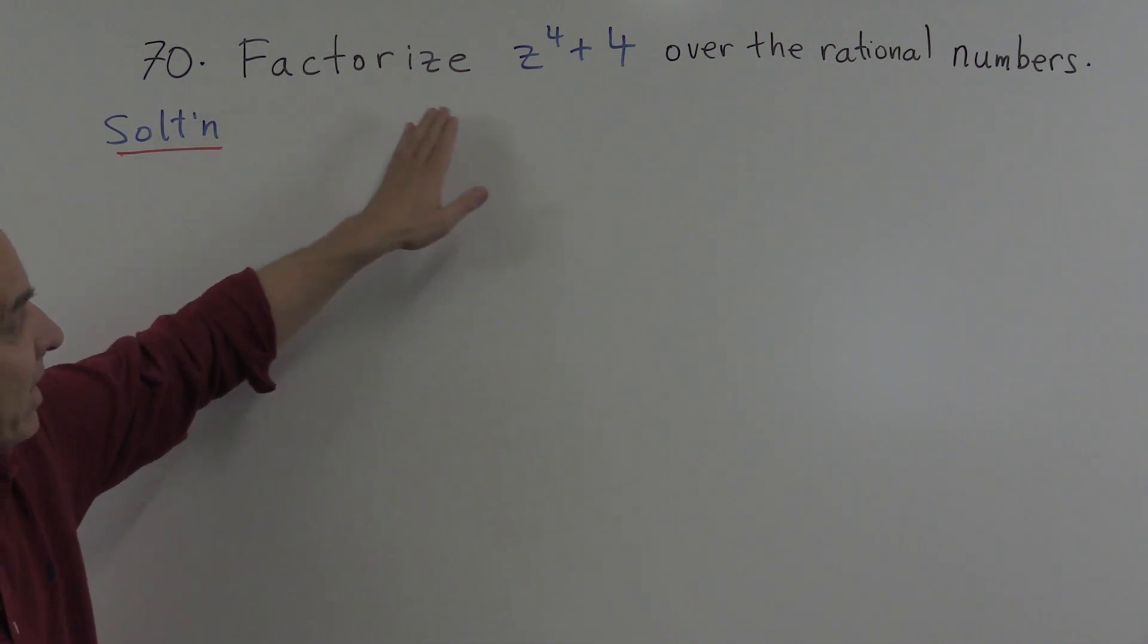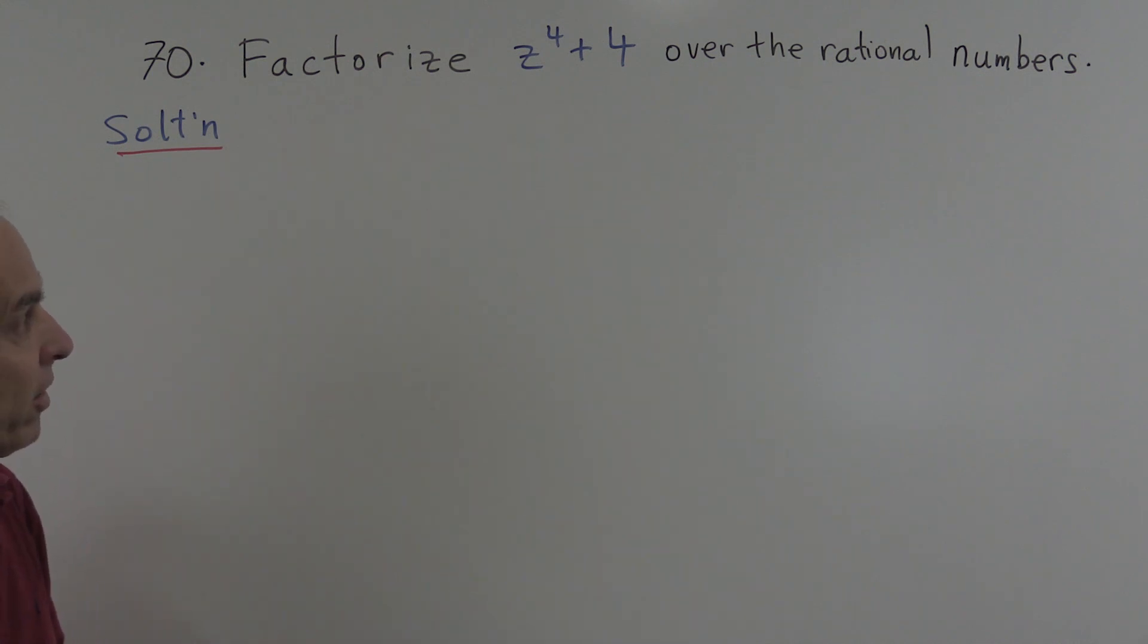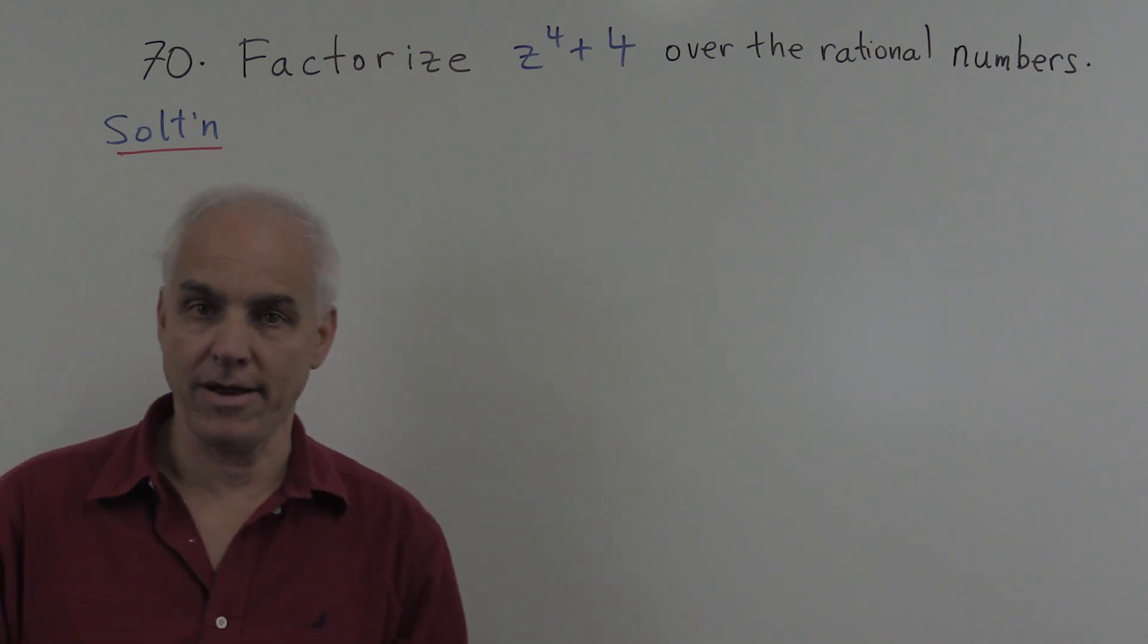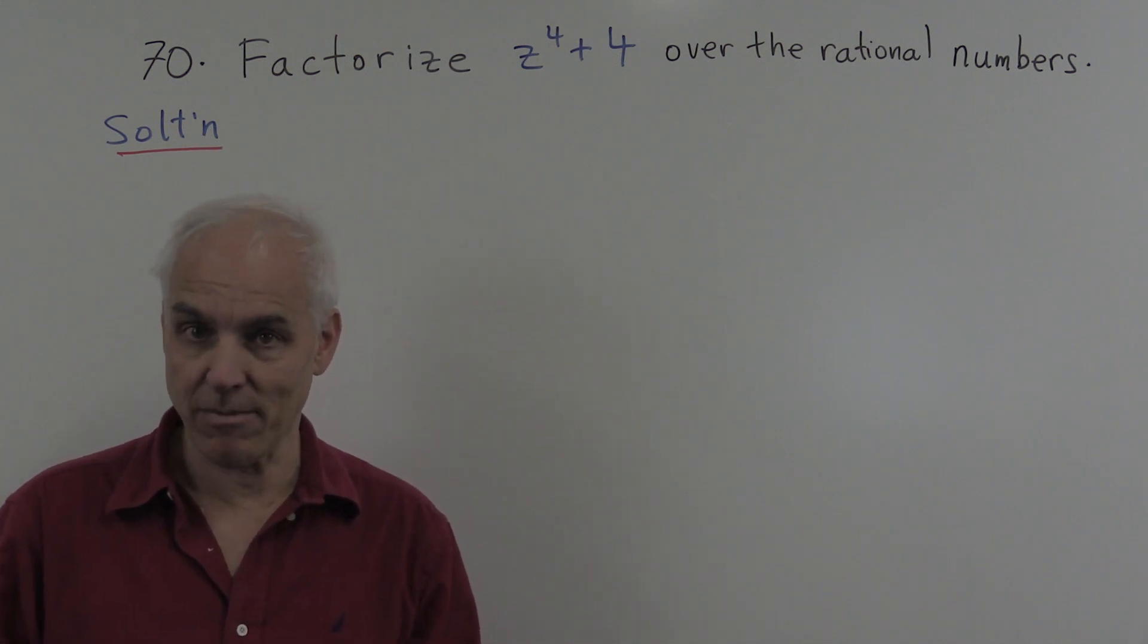So the problem is factorize z to the fourth plus 4 over the rational numbers. We want to factor this thing with coefficients which are rational numbers.